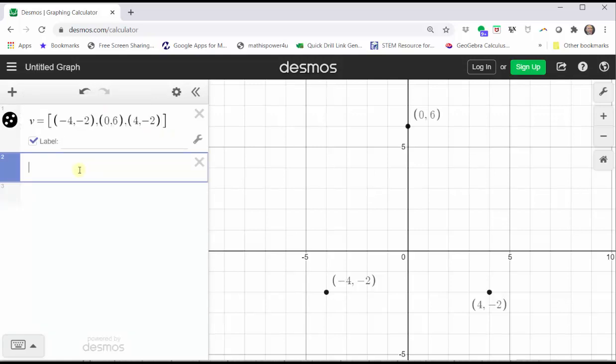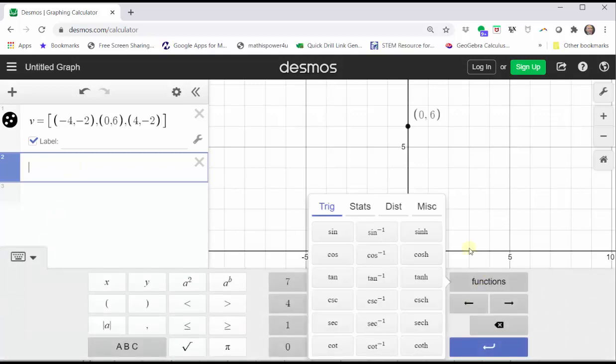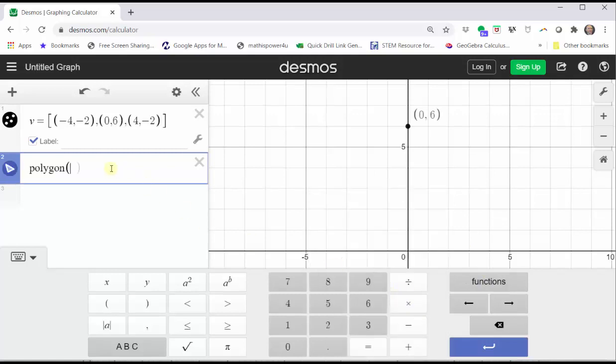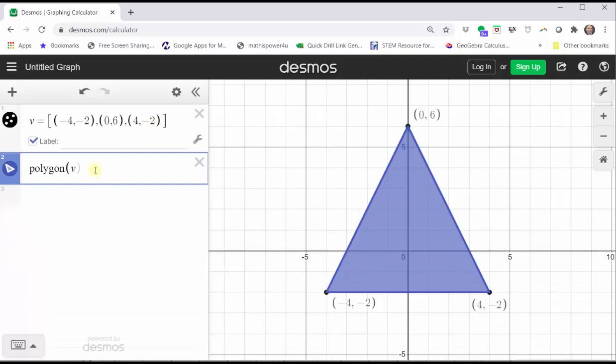Now we will sketch a polygon using the polygon feature. We can type in polygon from the keyboard, or click on the Desmos keypad, click functions, click miscellaneous, and click polygon. Then we simply enter the variable V for the list that contains the ordered pairs of the vertices. Now if we close the Desmos keypad, we can see the polygon sketched on the coordinate plane. Notice how the closed parenthesis after the V is not required. If we click outside cell two, it's automatically added.